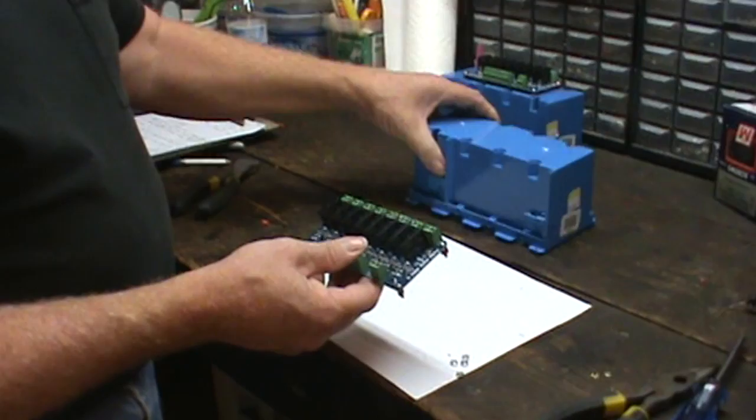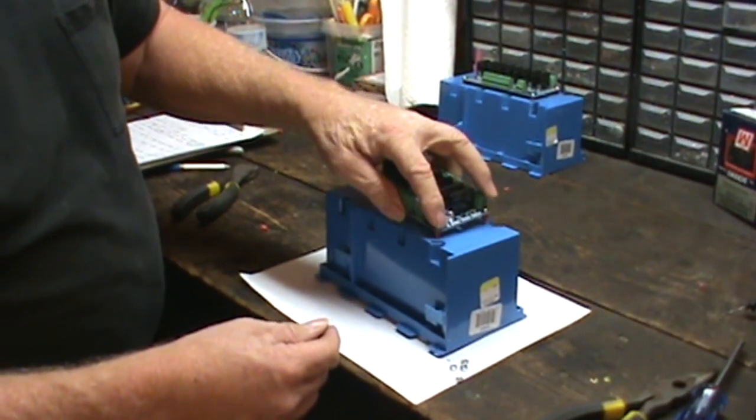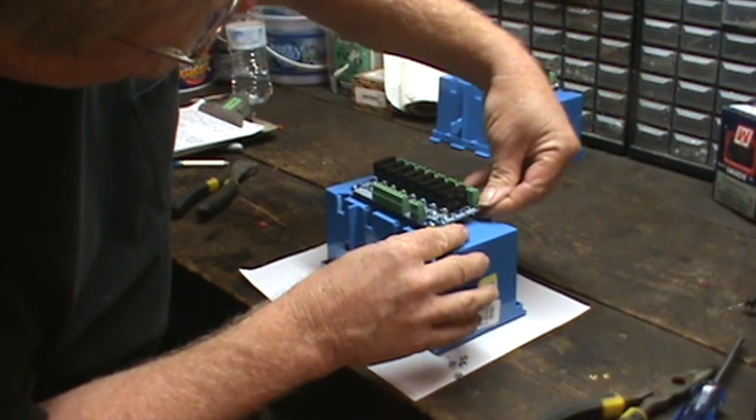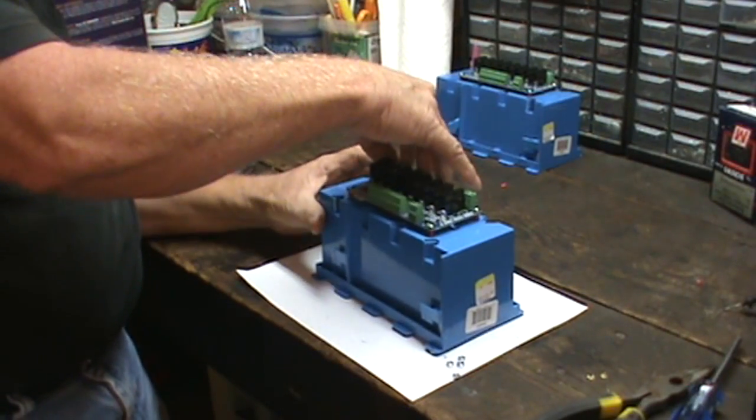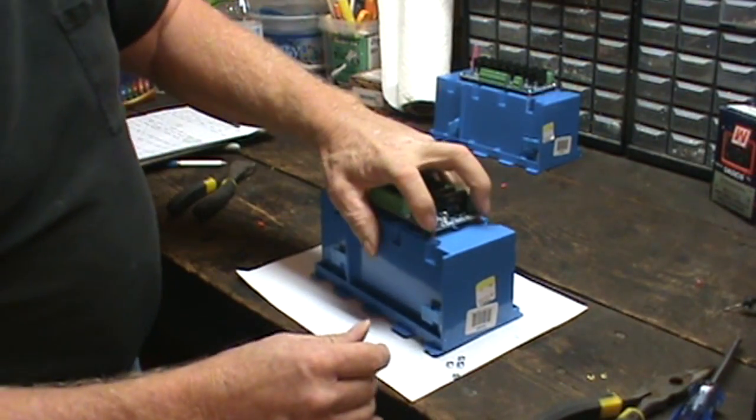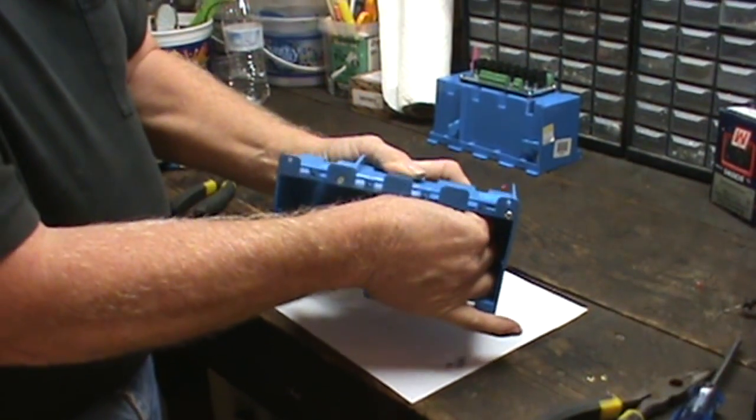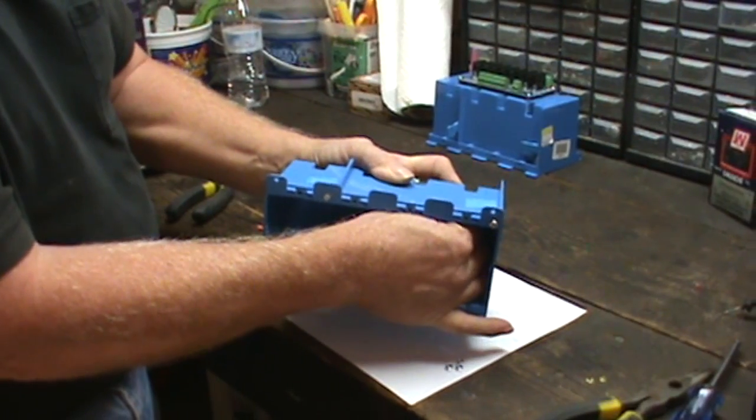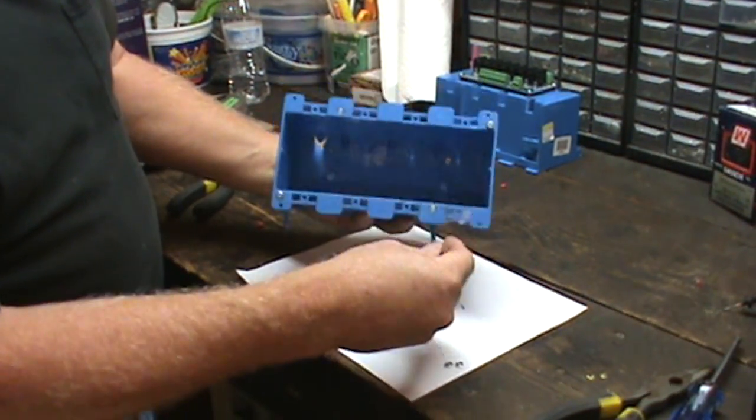All right now let's attach this to the gang box. Drop your four machine screws in through the holes. Now holding the screws, just flip it up where you can get a nut started on the inside. And do this with all four of them.